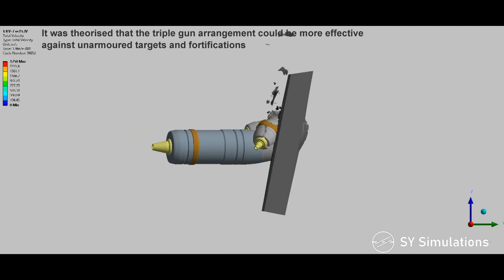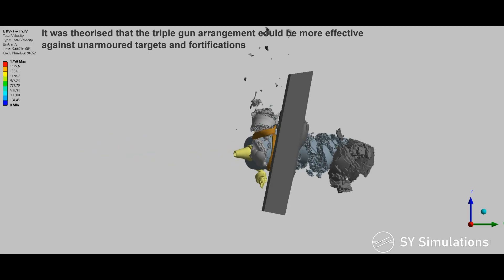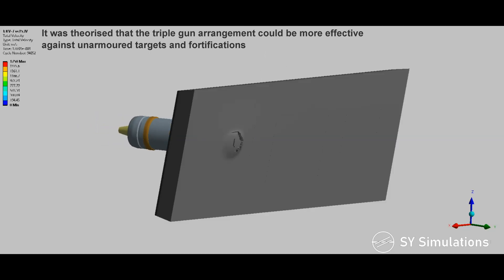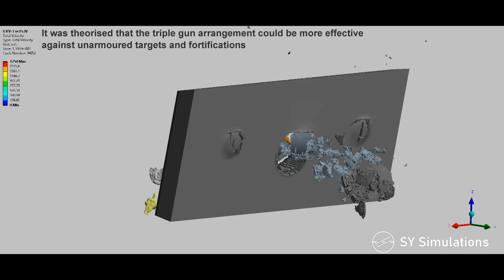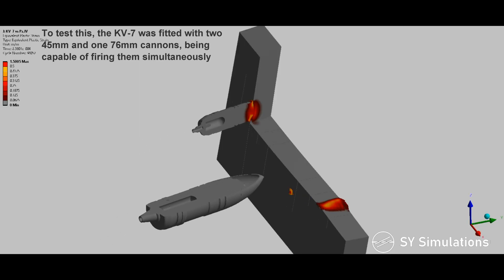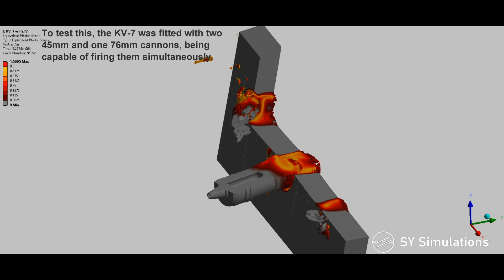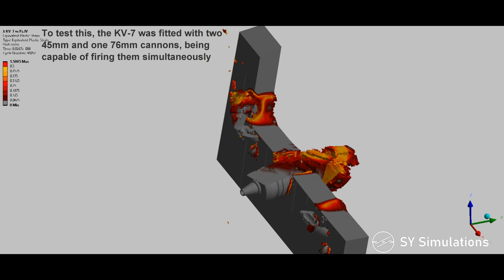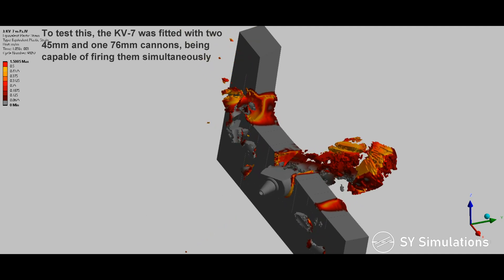It was theorized that the triple gun arrangement could be more effective against unarmored targets and fortifications. To test this, the KV-7 was fitted with two 45-millimeter and one 76-millimeter cannons, being capable of firing them simultaneously.